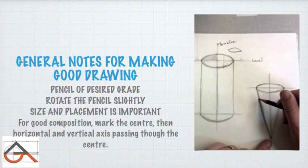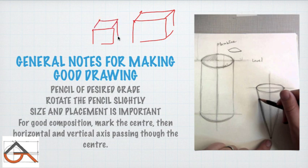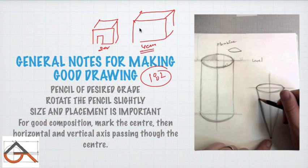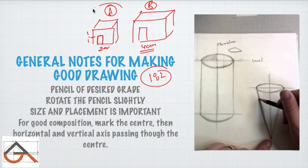Proportion, on the other hand, is when we discuss different elements of the same object. For example, if a window's width is 1 cm and its height is half a centimetre, the ratio of height to width is 1:2 — that is proportion. Proportion is always about elements within the same object, while scale compares one object to another.